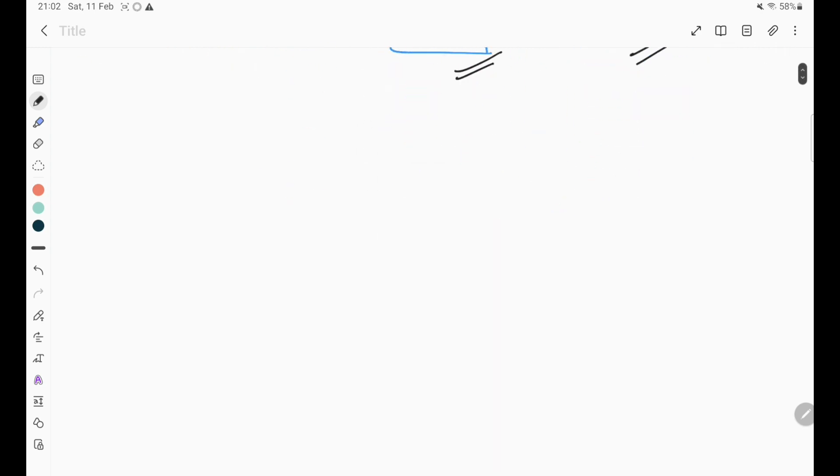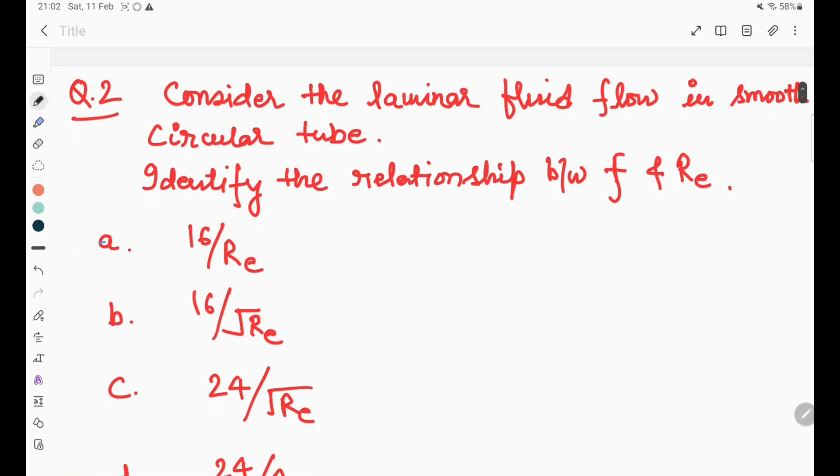The second question considers laminar fluid flow in a smooth circular tube. Identify the relationship between laminar fluid flow and Reynolds number. Option A is the right answer: 16 upon Re.